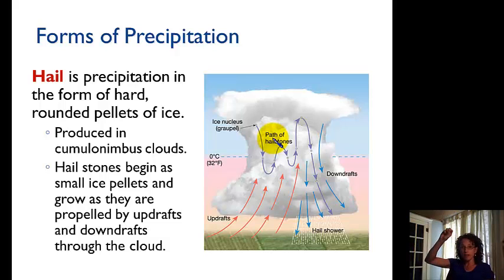And so these hailstones, these solid ice round pellets, keep getting pushed up and they fall down and they get pushed up and they fall down. And in that process, they grow and they grow and they grow